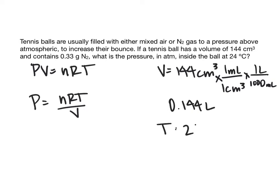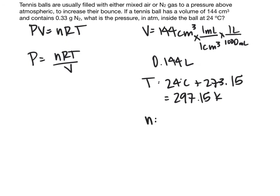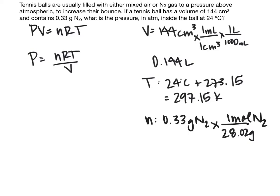Temperature is 24 degrees Celsius plus 273.15, which equals 297.15 Kelvin. Now we need to determine N. We have 0.33 grams of N2 and need to convert that to moles. There are 28.02 grams in one mole of N2, which gives us 0.01178 moles of N2.